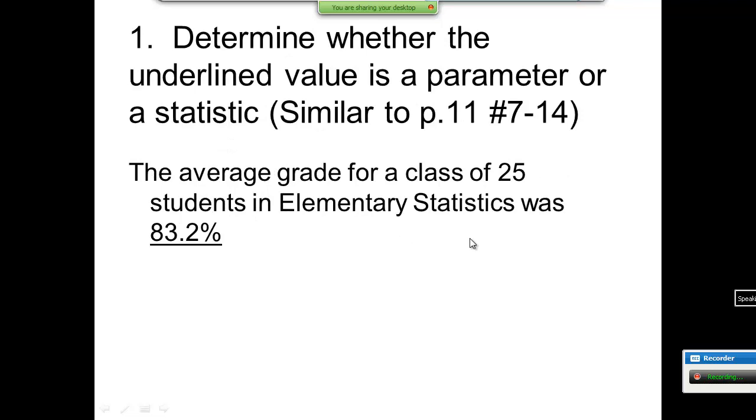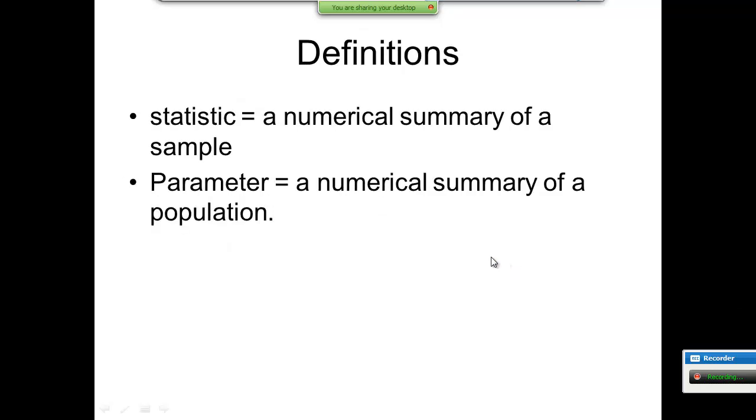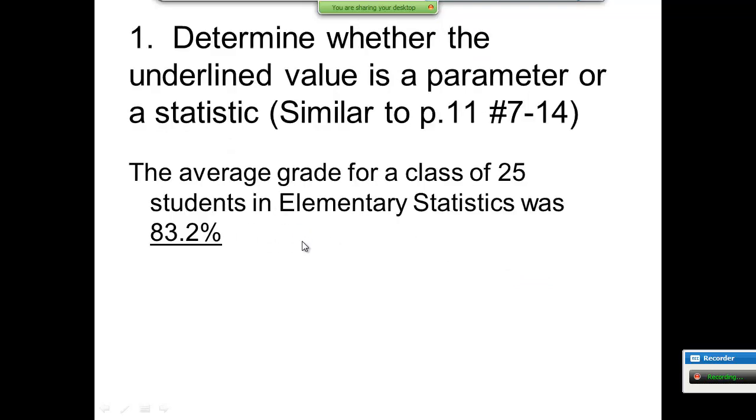Let's take a look at our first example. It says determine whether the underlying value is a parameter or a statistic. Remember, statistic is sample, parameter is population, so P for population. The average grade for a class of 25 students in elementary statistics was 83.2%. See how this does not refer to a sample at all? This is just using my class as a population, so this is a parameter.